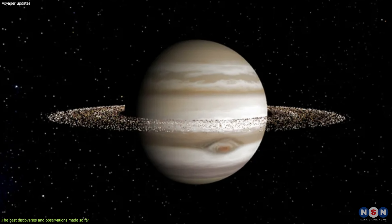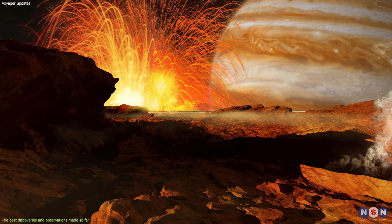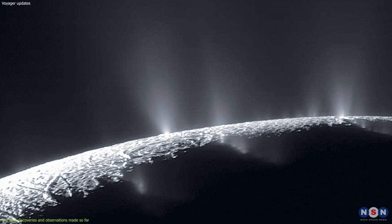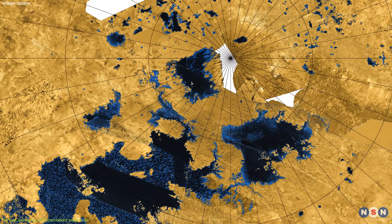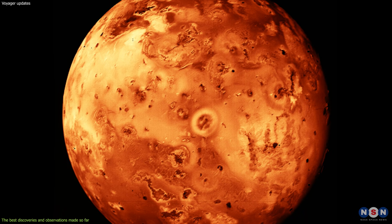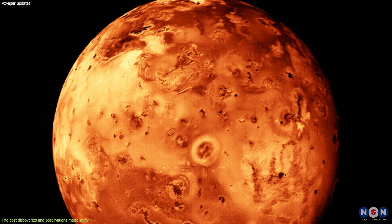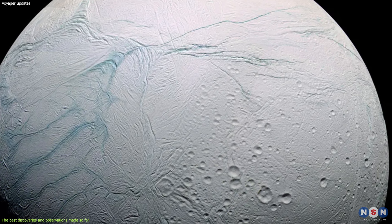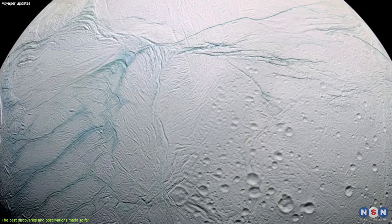They witnessed the volcanic activity on Io, the icy geysers on Enceladus, and the methane lakes on Titan. These phenomena show that some of the moons have internal heat sources that drive their geology and chemistry. They also suggest that some of them have subsurface oceans that could support life.